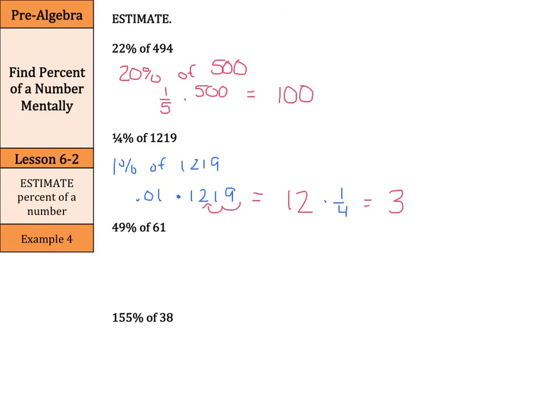What about 49% of 61? Well, what if we compute this as 50% of 60? Well, 50% is 1-half times 60, and half of 60 is 30.